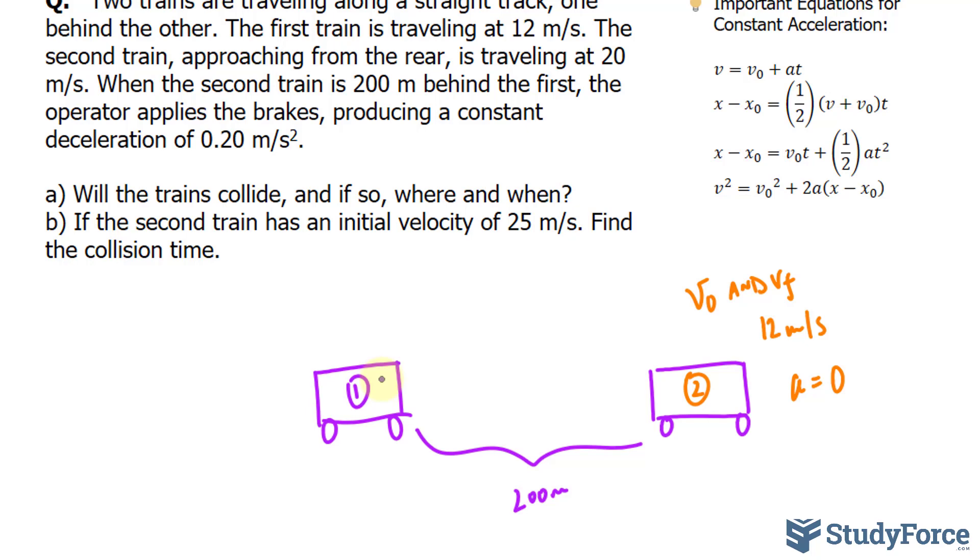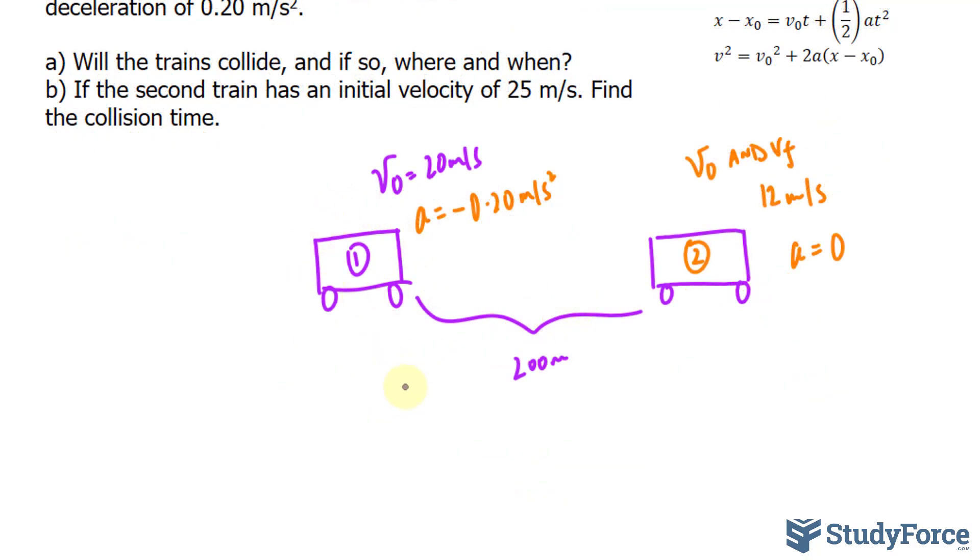The speed of train 2 is constant. It's traveling 12 meters per second. So V initial and V final for train 2 is 12 meters per second. And when there's a constant speed, the acceleration is equal to 0. For this train, its speed, the moment the brakes are activated, I'll call that V initial, is 20 meters per second. It has an acceleration of negative 0.20 meters per second squared because it's deceleration. It's slowing down.